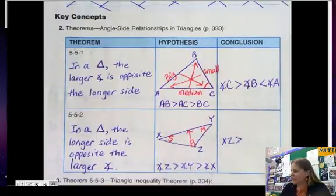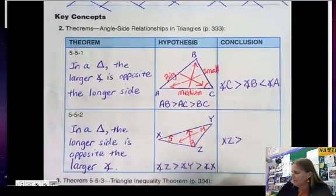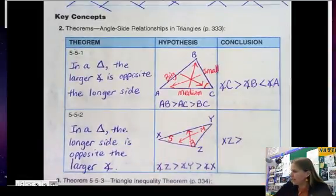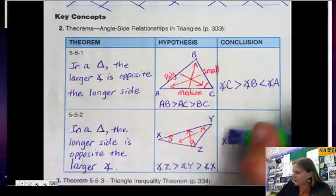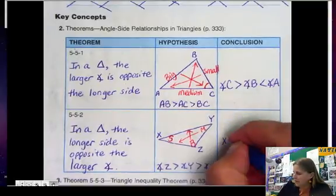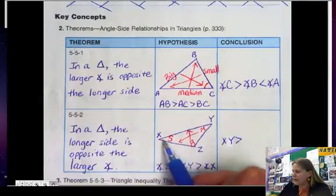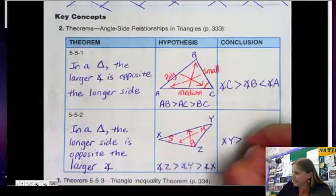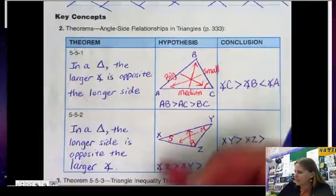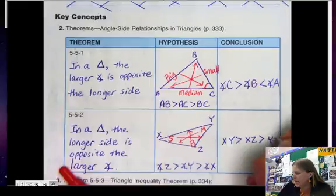I made a mistake there — across from the medium-sized angle should be XY, not XZ. So XY is the medium side. And across from the smallest angle is the smallest side, which is YZ.